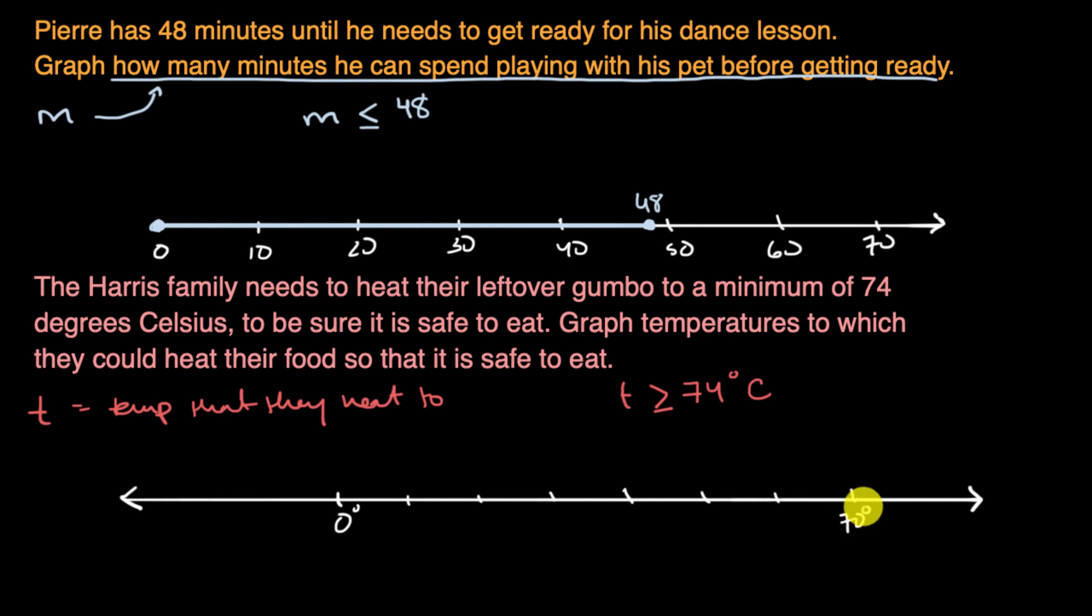Let me label that one. That's 70 degrees. This would be 80 degrees right over here. If we wanted to, this would be negative 10, negative 20. And we have to be greater than or equal to 74 degrees Celsius.